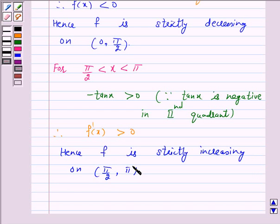Hence, the given function f(x) = log cos x is strictly decreasing on the open interval (0, π/2) and strictly increasing on the open interval (π/2, π). Hence, proved.